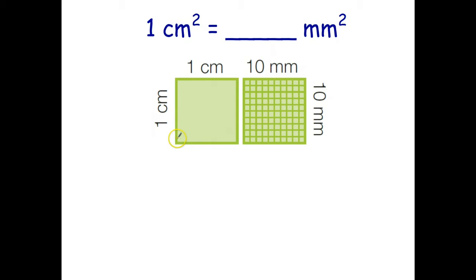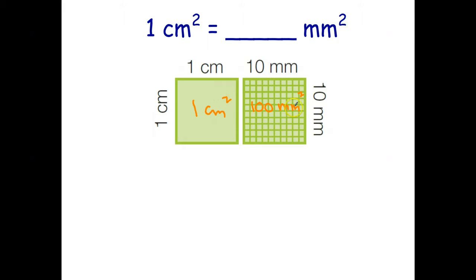Down here we have a square, one centimeter by one centimeter. That fairly obviously has an area of one square centimeter. Now what we've done here is we've divided that centimeter into 10 millimeters — we've divided each centimeter length into 10 millimeters — and that means you're going to have 10 by 10, or 100 square millimeters. So the question is, what's the easiest way to convert from square centimeters to square millimeters?